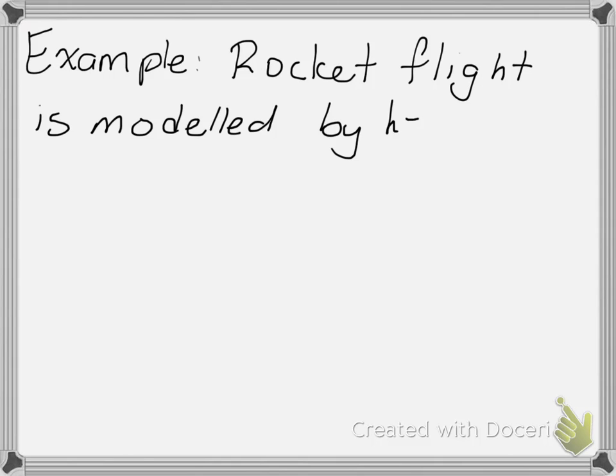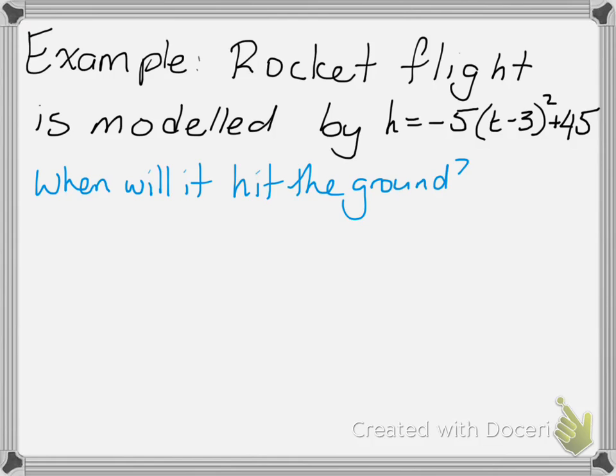Rocket flight is modeled by this equation, so the height of the rocket is negative 5 times t minus 3 squared plus 45. We'd have something like the height is in meters and t is seconds. I want to know when will it hit the ground. Well, for it to hit the ground, I know that h has to be zero because height is zero means it's hitting the ground.